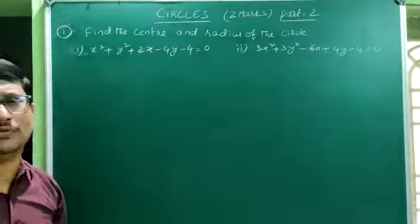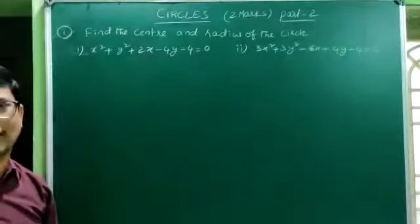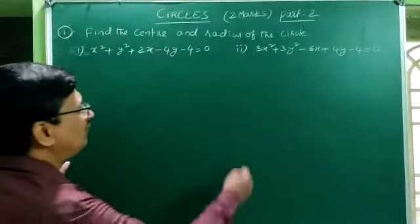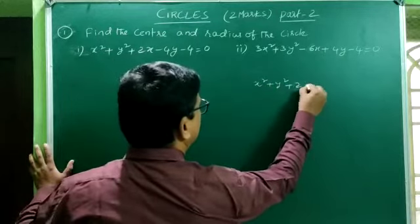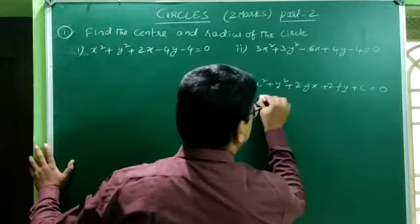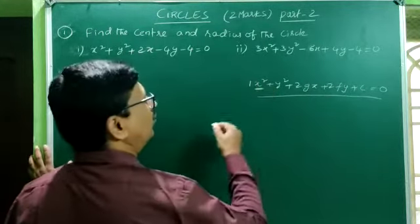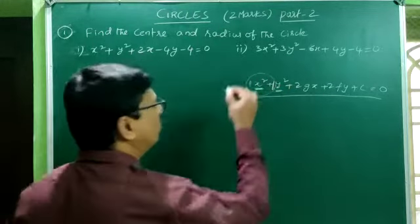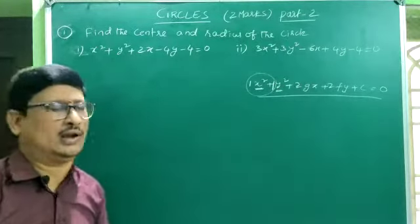In order to solve this problem, first we have to check whether the given equation is in the general form of the circle equation or not. The general form of the circle equation is x² + y² + 2gx + 2fy + c = 0. In the general form, the coefficient of x² is 1 and the coefficient of y² is 1 — these two should be equal.